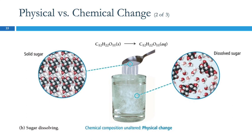Mixing two things together is generally only a physical change. If you take flour and salt and mix them together, the flour and the salt are still flour and salt — it's just now they're mixed. So that would be a physical change.